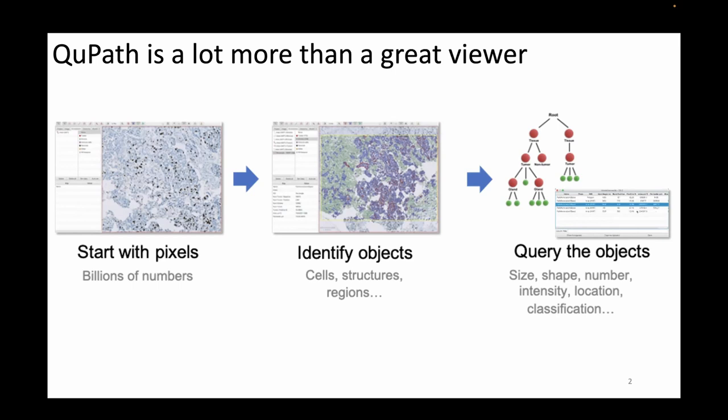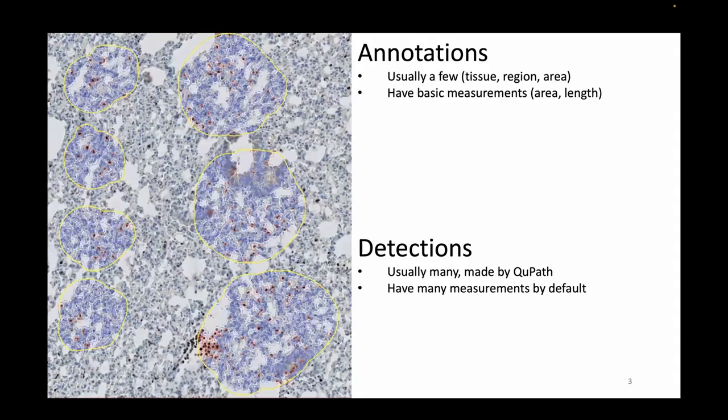QPAD is definitely a lot more than a great viewer. You start with pixels — those are billions of numbers — you identify objects, which could be annotations, structures, regions, or cells, and then you can query those objects and ask questions about their size, shape, intensity, location, and so on.